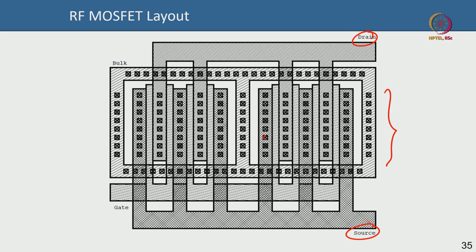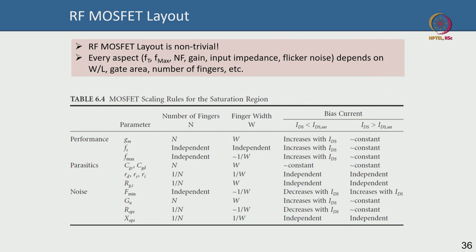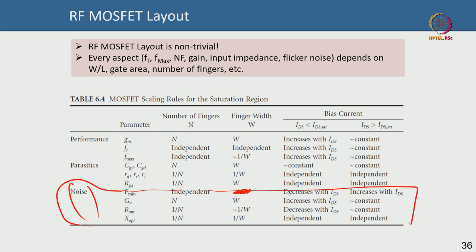All the black features visible in the layout are via holes taken from bottom to top. MOSFET layout is not trivial at all because cutoff frequency, noise figure, gain, and impedance all depend on the layout—the gate width and number of fingers. Regarding noise: fmin does not scale as 1/W; that will be addressed when we discuss noise later.